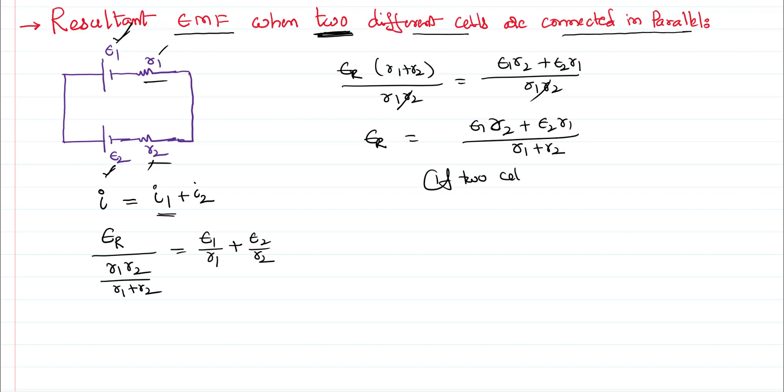If two cells are identical, then e1 equals e2, internal resistances are also equal. What happens to the resultant? Here is e1 r and e2 r. In these two terms, the 2 and r will cancel, and as I told you at the beginning, when two identical cells are connected, we get an effective EMF that is equal to the EMF of only one cell. This is how we can solve the problem.